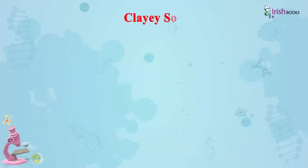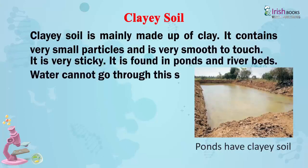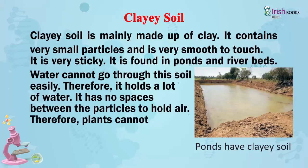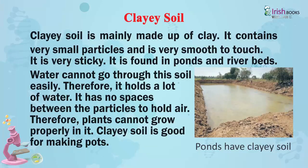Clay soil is mainly made up of clay. It contains very small particles and is very smooth to touch. It is very sticky and is found in ponds and river beds. Water cannot go through this soil easily; therefore, it holds a lot of water. It has no spaces between the particles to hold air, so plants cannot grow properly in it. Clay soil is good for making pots.